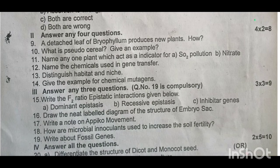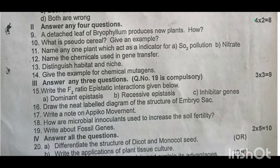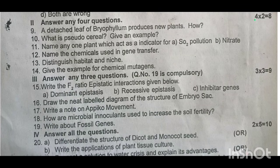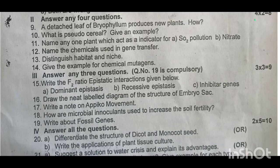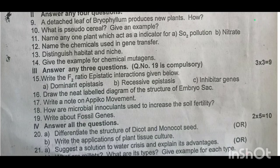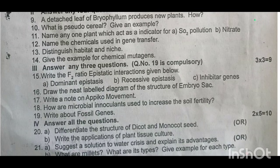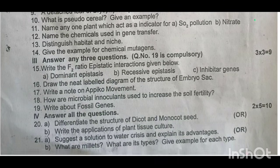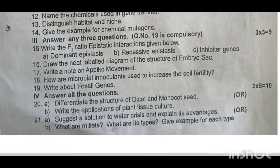Here are the five-mark questions — most important. Part B: write the application of plant tissue culture. Question 21, suggest a solution to the water crisis and explain its advantages. Or, what are millets? What are its types? Give examples for each type.